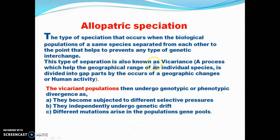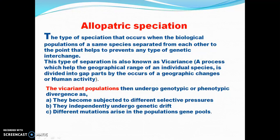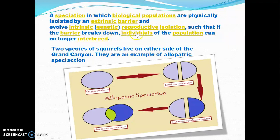You have to remember the concept of vicariance — the process which shapes the geographical range. Speciation in which biological populations are physically isolated by extrinsic barriers also involves intrinsic genetic reproductive isolation. Such that if the barrier breaks down, individuals of the population can no longer interbreed.